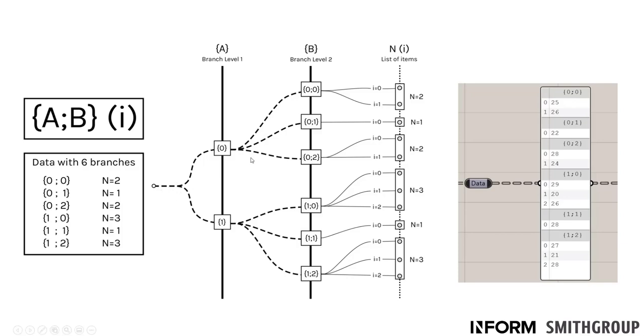And in this analogy, the items would be the leaves of the tree, or the fruit that you actually want.